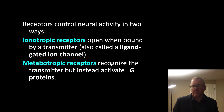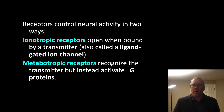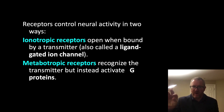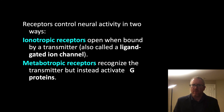Ionotropic receptors are ion channels that can be triggered or activated either by a ligand or voltage. Metabotropic receptors, by contrast, are not ion channels like ionotropic ones are — they are typically a pentameric unit composed of five proteins that traverse the plasma membrane to make a pore.